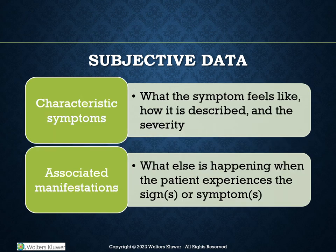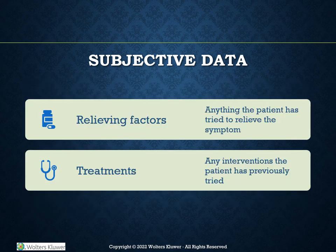Characteristic symptoms: what the symptom feels like and how it is described in severity — for example, stabbing, 6 out of 10 pain. Associated manifestations: what else is happening when the patient experiences the sign or symptoms — for example, shortness of breath. Relieving factors: anything the patient has tried to relieve the symptom — for example, lying down. You can also state aggravating factors, like exercise.